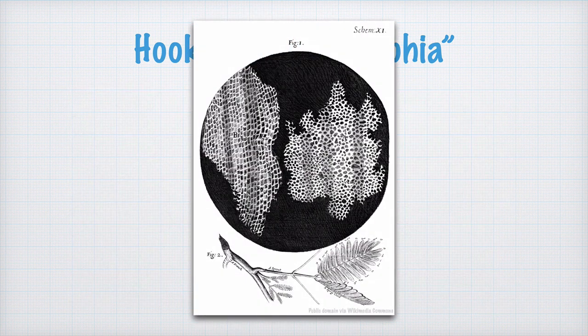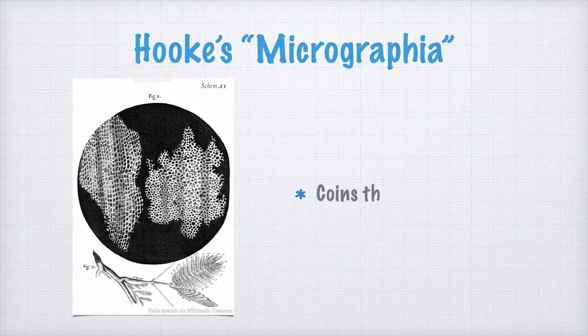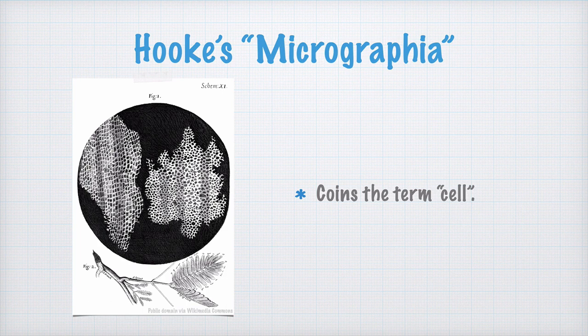Another one of all the samples that Hooke studied was the bark of some cork oak. In this sample, he saw something that he thought resembled the cells of a monastery. In this way, he coined the term cell, although nobody yet knew what a cell actually was, or is.